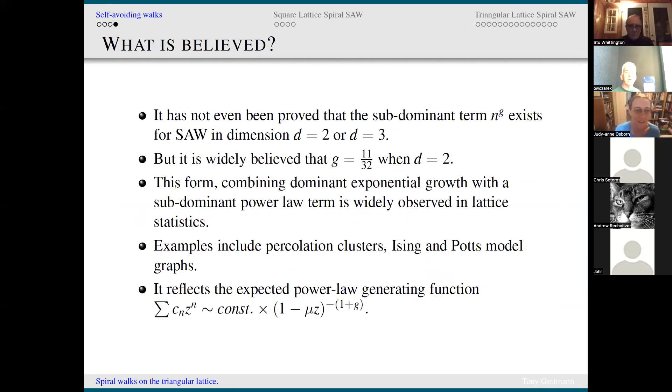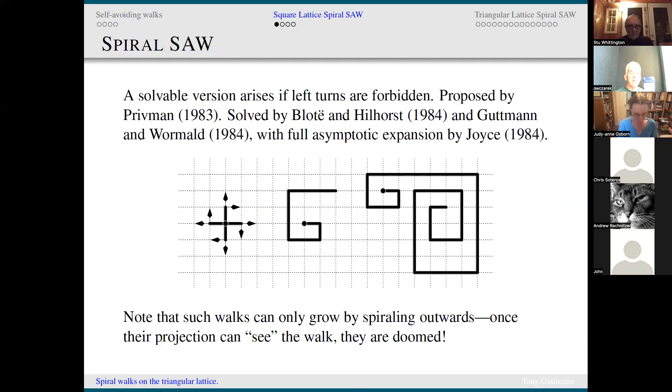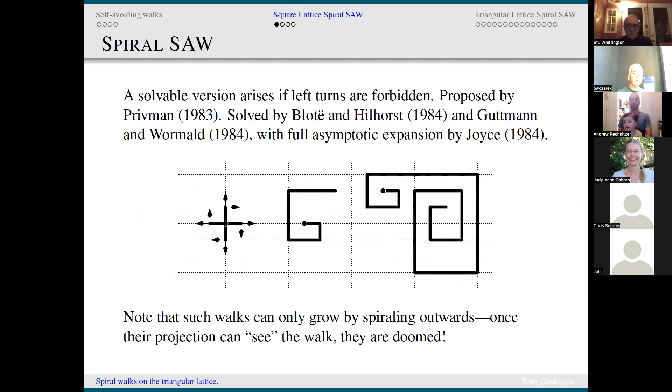The main question we want to ask is how many self-avoiding walks there are of length N and how do they grow? And we can't solve that problem in two dimensions or more. So, as is so often the case when you can't solve something, you look for something simpler.